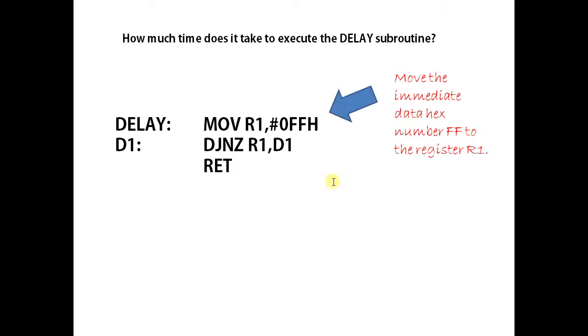This instruction moves the immediate data hex FF to register R1. R1 becomes 255. That is the decimal value for hex number FF.